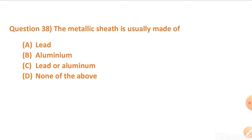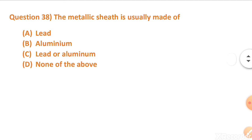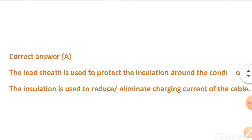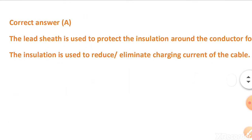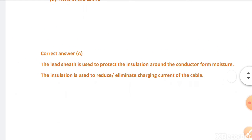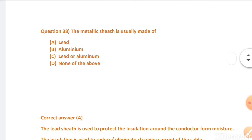The correct answer is option A. The metallic sheath is usually made of lead. The lead sheath is used to protect the insulation around the conductor from moisture. The insulation is used to reduce the charging current of the cable, so option A is correct.